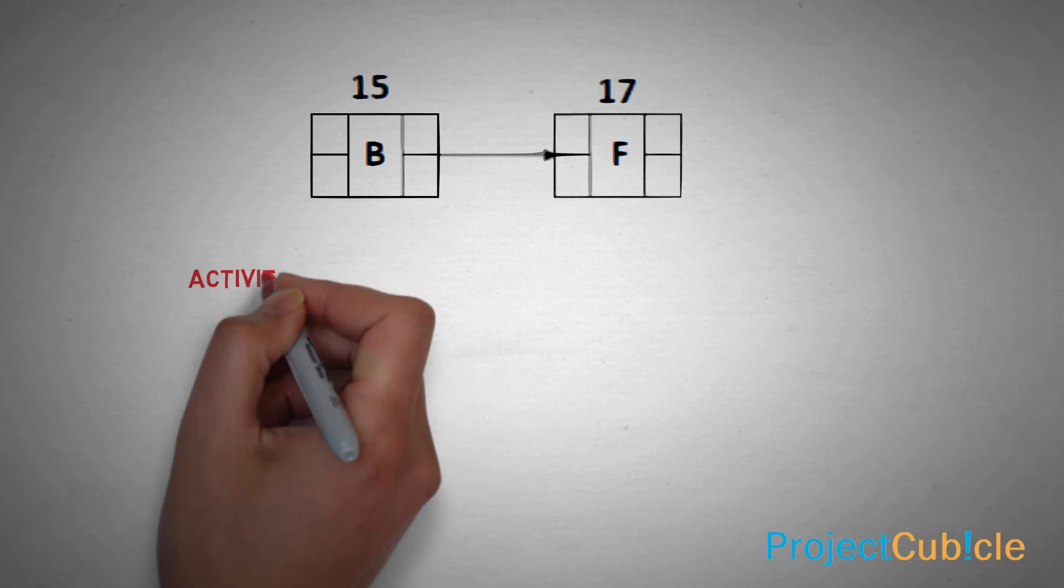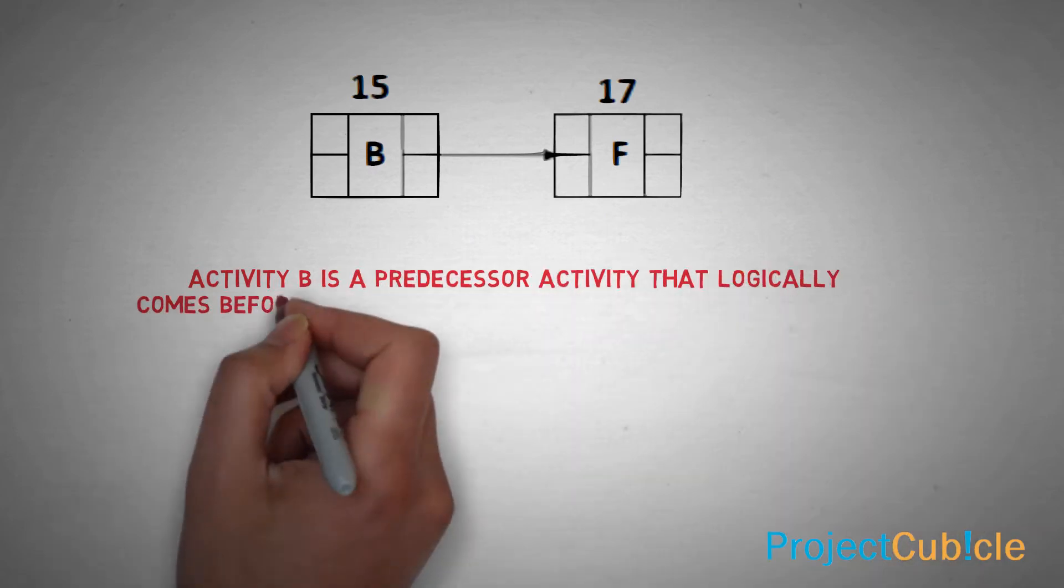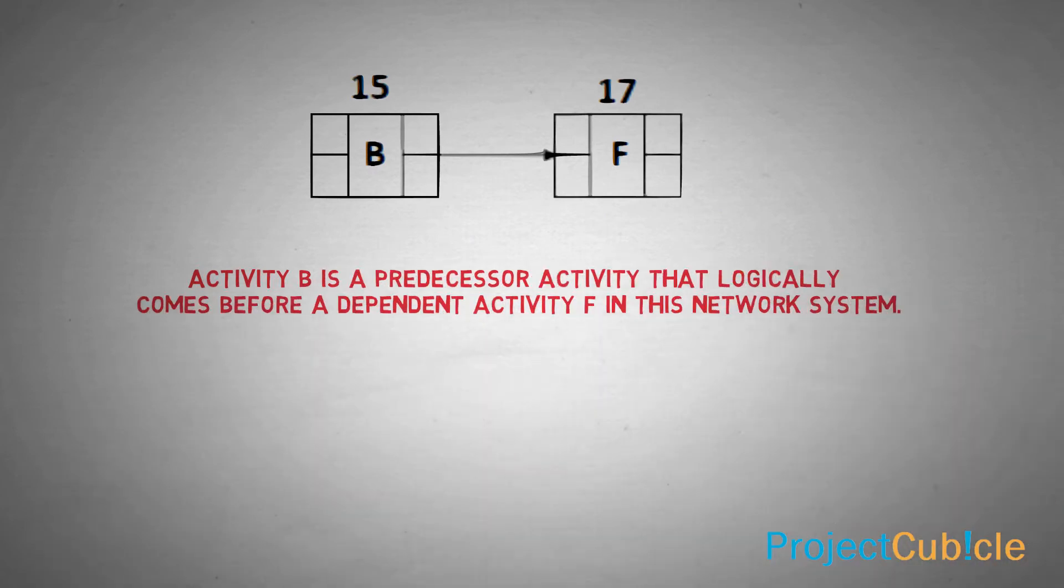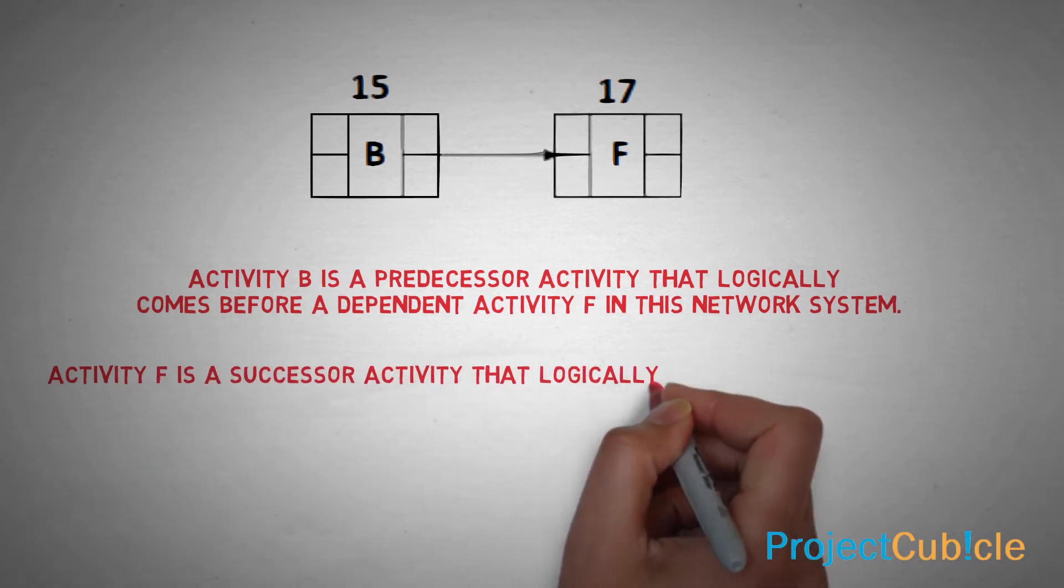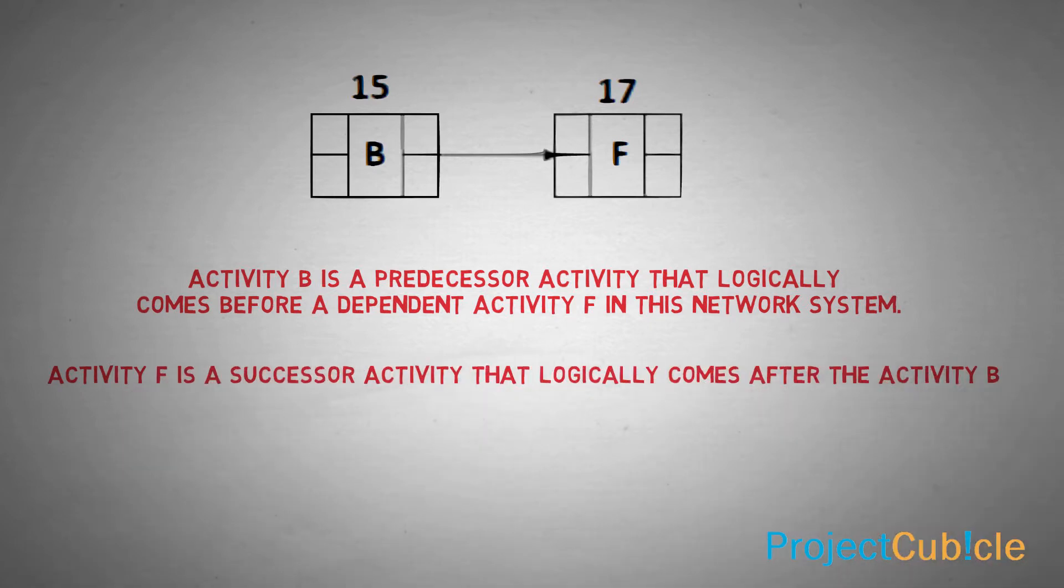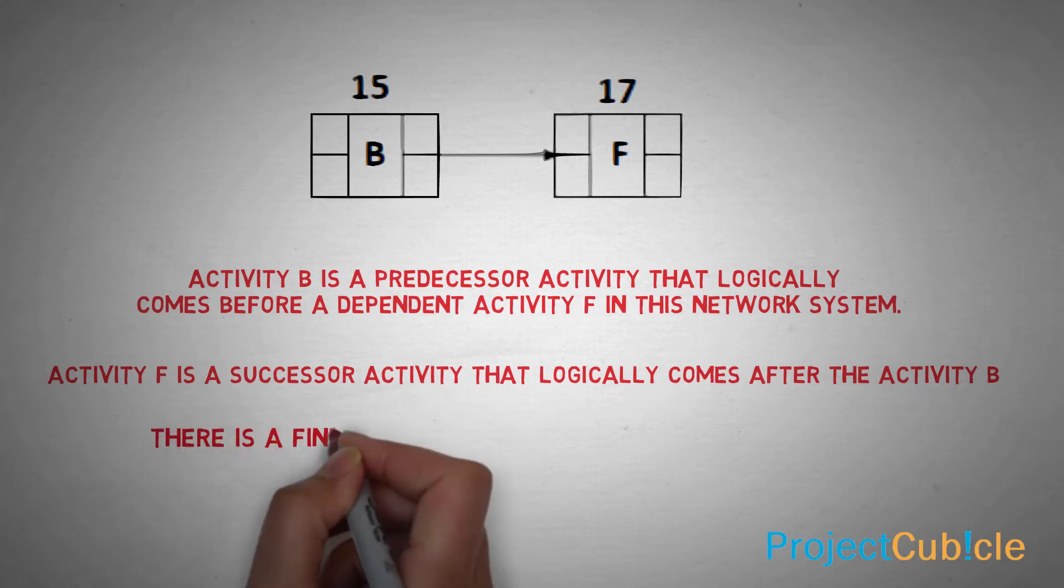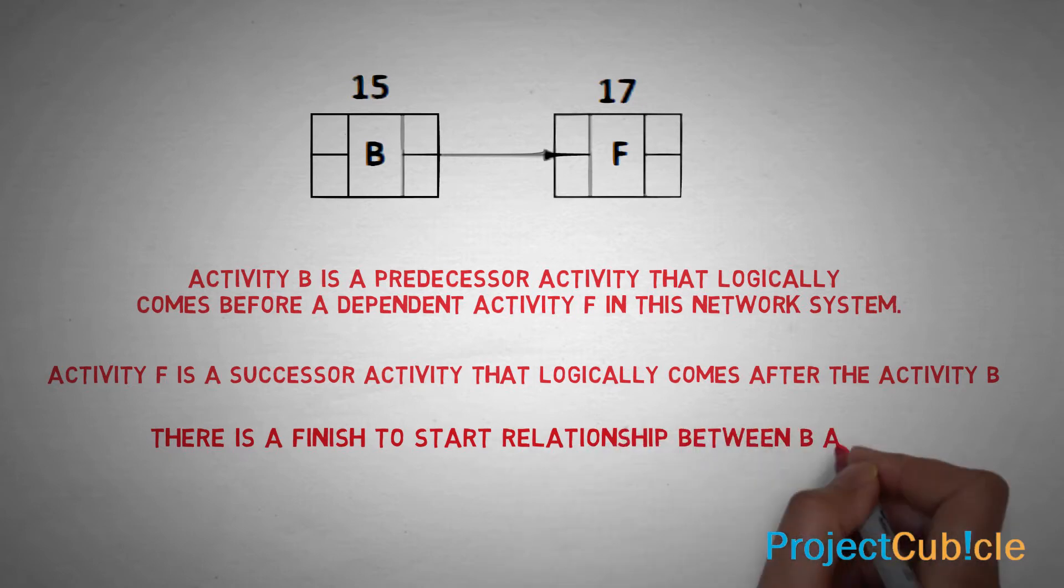Activity B is a predecessor activity that logically comes before a dependent activity F in this network system. Activity F is a successor activity that logically comes after the activity B. There is a finish to start relationship between B and F.